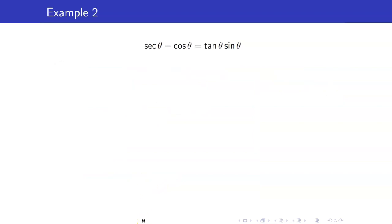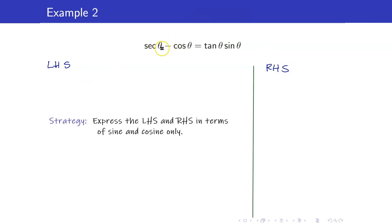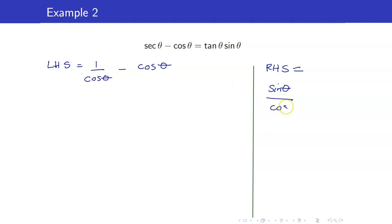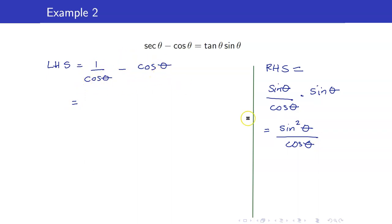Let's have another example. We want to show that secant theta minus cosine theta equals tangent theta times sine theta. Again, I will start with my left-hand side and put my right-hand side as a target. My technique is to express everything in terms of sine and cosine. Secant theta is 1 over cosine theta, minus cosine theta. Remember, do not manipulate both sides at the same time, so I am simplifying them separately.